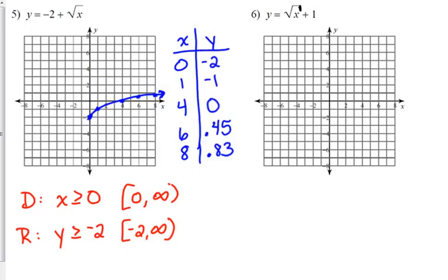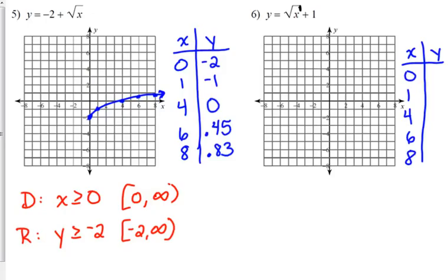For number six, notice that the plus one is outside of the square root. That's why I put a tail on my square root symbol — to distinguish that x is the only thing under the square root and the plus one is on the outside. Be very careful when analyzing this, plugging in x values of zero, one, four, six, and eight. If you're plugging it into your calculator, make sure you close the parenthesis correctly.